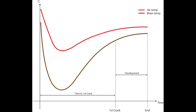As the beans continue to roast they will reach a temperature of around 220 to 230 degrees centigrade and will enter the second crack. This is when the beans start to break down and release more oils. Once the beans have reached the desired roast level they will be removed from the roaster and cooled quickly to prevent further roasting.